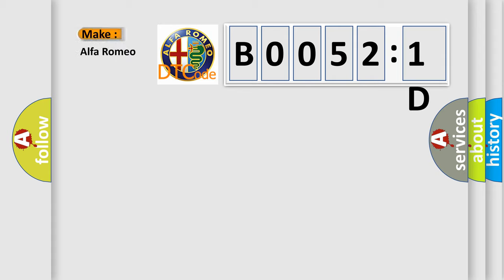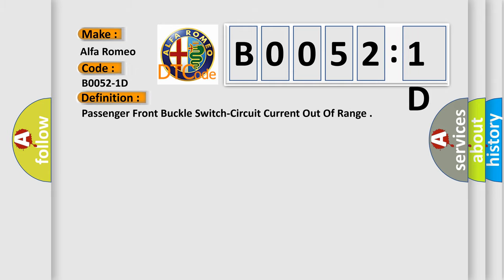So, what does the diagnostic trouble code B00521D interpret specifically for Alfa Romeo car manufacturers? The basic definition is Passenger front buckle switch circuit current out of range.